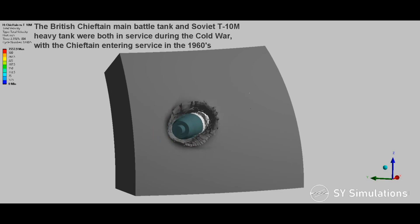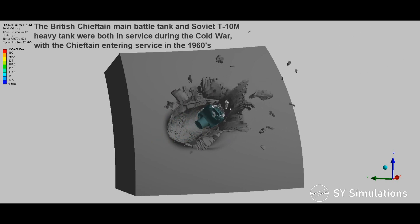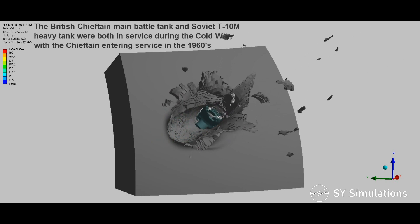The British Chieftain main battle tank and Soviet T-10M heavy tank were both in service during the Cold War, with the Chieftain entering service in the 1960s.